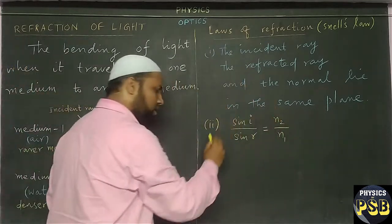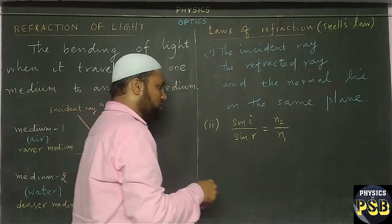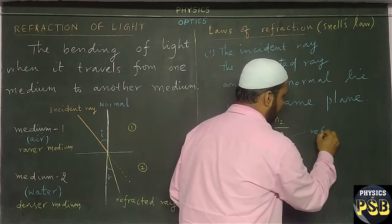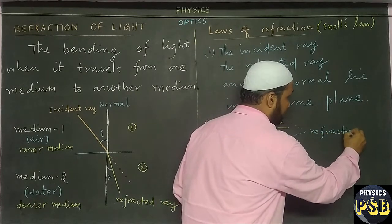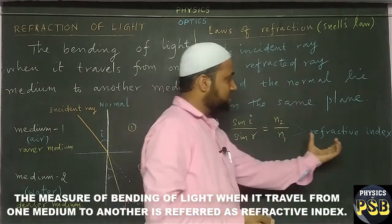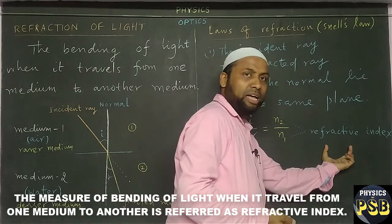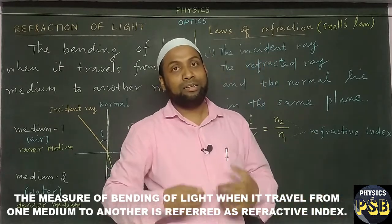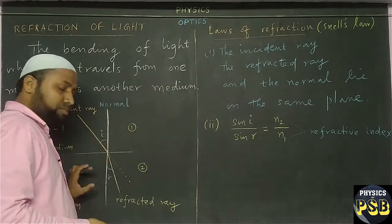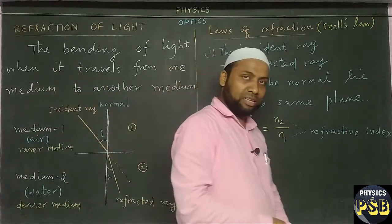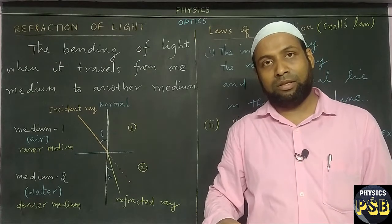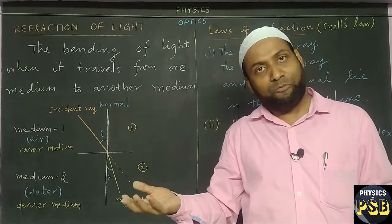And what do you mean by refractive index? Refractive index means the measurement of refraction — it is the measure of bending of light that a light undergoes when it travels from one medium to another medium. Refractive index means the measure of bending of light when it travels from one medium to another medium.